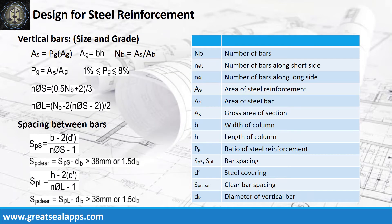Solve the area of steel from steel ratio and gross area of section to get the number of vertical bars, followed by number of bars for the short side and number of bars for the long side, then get the spacing between bars and check clear spacing between bars.